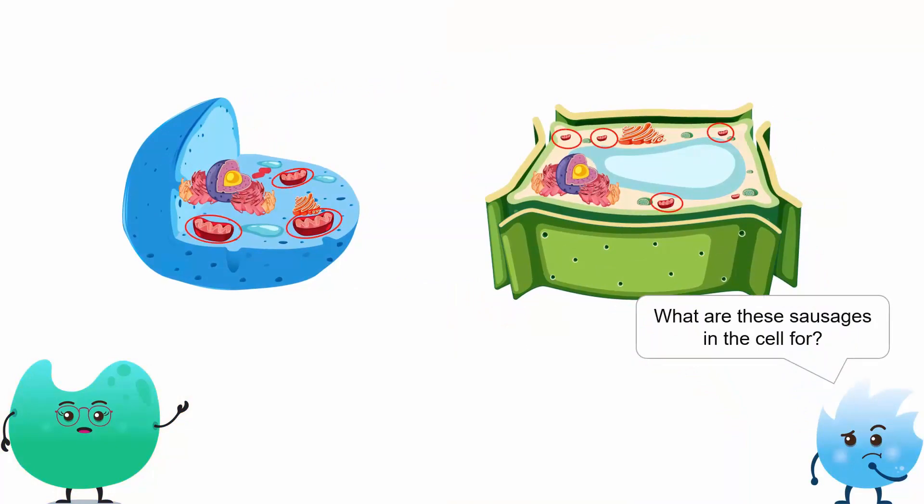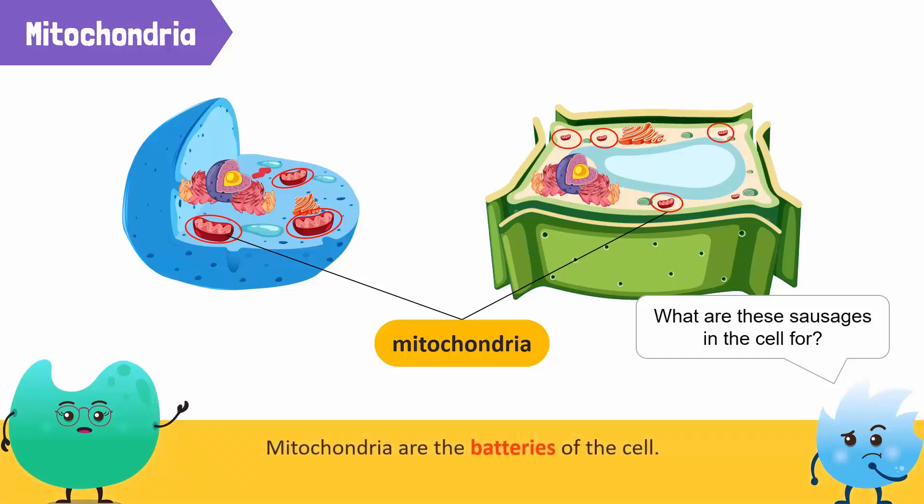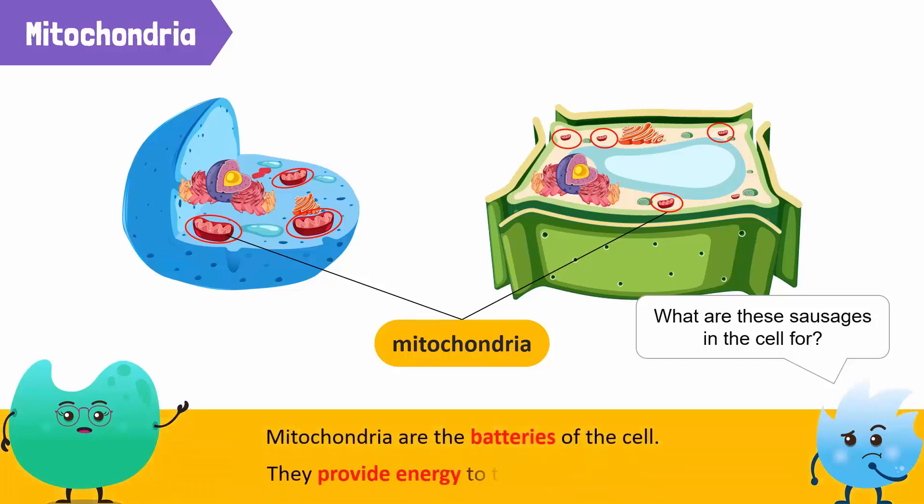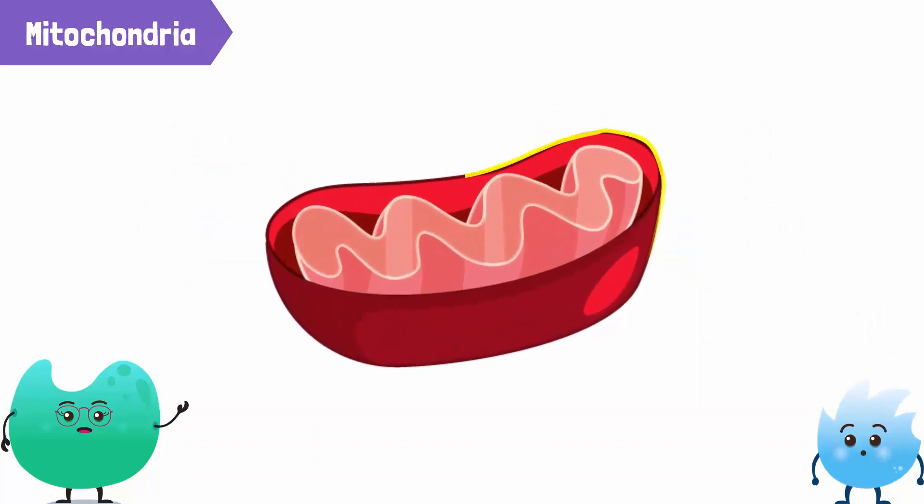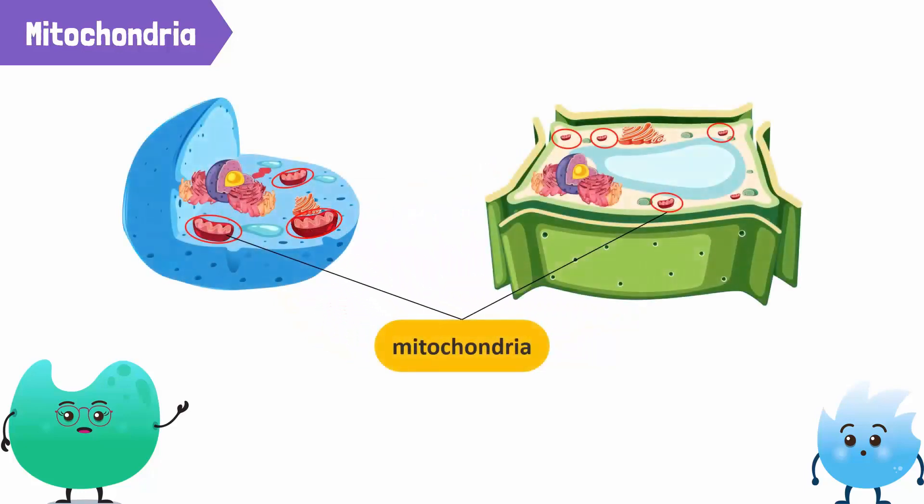What are these sausages in the cell for? These sausage-shaped organelles are mitochondria. Mitochondria are the powerhouses of the cell because they provide energy to the cell. Its outer surface is smooth while the inner membrane has folds. Look! Mitochondria are present in both the cells.